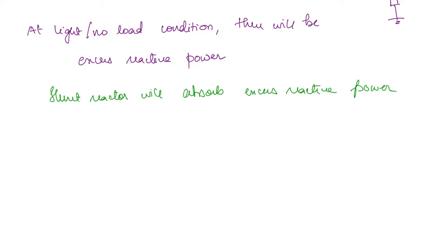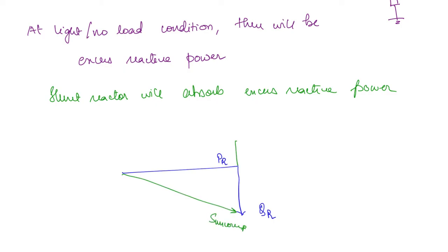You can understand this from the power triangle as well. This is the active power at the receiving end, and the reactive power is like this — the uncompensated complex power is shown here. Now when we use a reactive load (inductive reactor), it will be in the leading direction, so the total reactive power is going to be reduced. The compensated reactive power will be Q_R minus Q_load, giving us the compensated complex power.